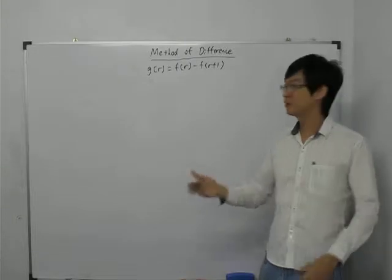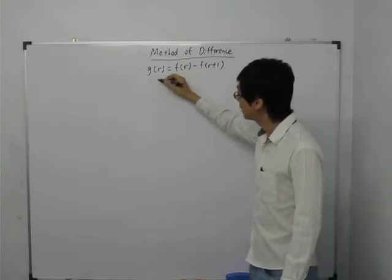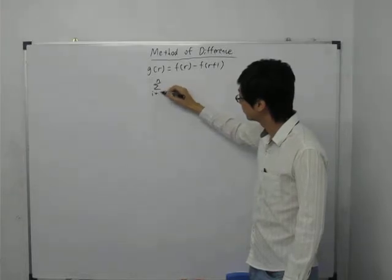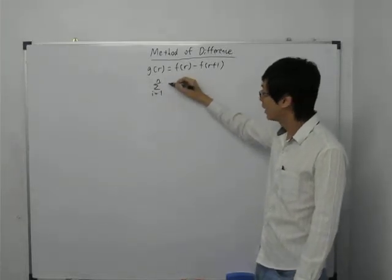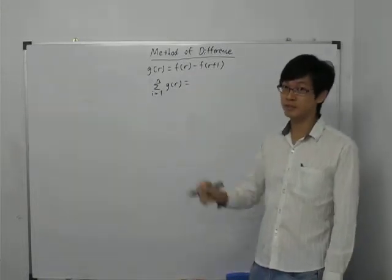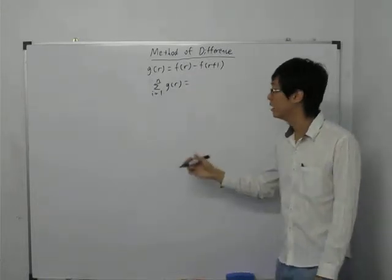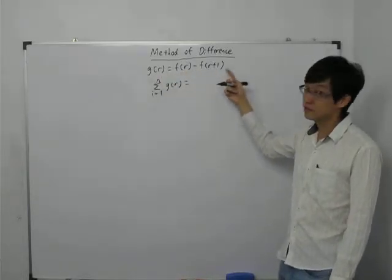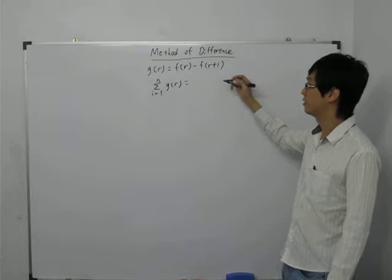And so, how do you apply method of difference? So, say for example, I need a summation from 1 to n. I need a summation g(r). G(r) is the expression. I will share with you an example later, after I share with you the concept. And so, my g(r) can be expressed as f(r) minus f(r+1), right?